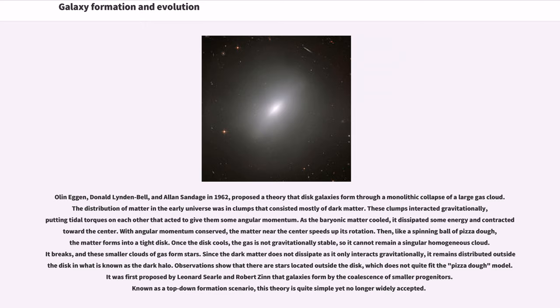Once the disk cools, the gas is not gravitationally stable, so it cannot remain a singular homogeneous cloud. It breaks, and these smaller clouds of gas form stars.